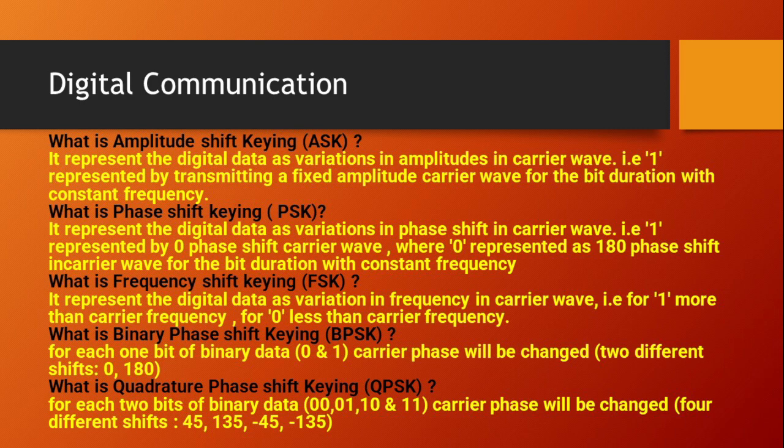What is quadrature phase shift keying (QPSK)? For each two bits of binary data — that is, 00, 01, 10, or 11 — the carrier phase will be changed to four different shifts: 45 degrees, 135 degrees, minus 45 degrees, and minus 135 degrees.